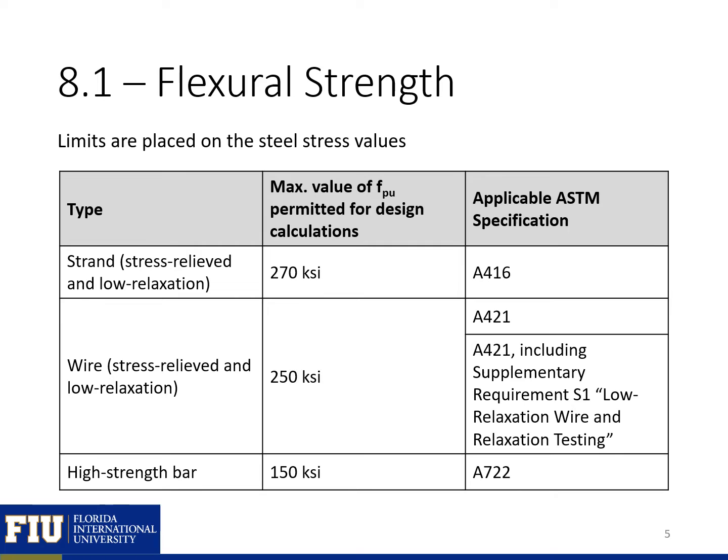The maximum stress that we can have in our pre-stressing strands is limited based on the type of pre-stressing. For typical strands, we'll usually have grade 270 KSI strands with an ultimate strength of 270, but older strands can have a lower strength of 250, or we can have high-strength pre-stressing bars like Dywidag bars, which will have an ultimate strength of around 150 KSI.